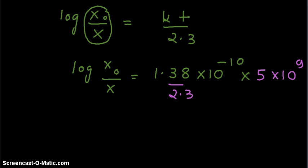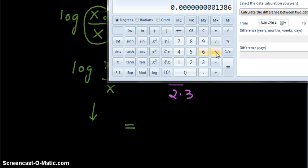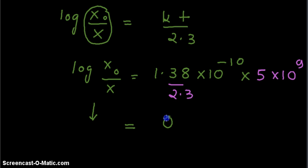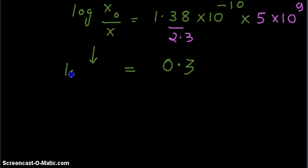So we get this equal to 5 × 10⁹ divided by 2.3, which equals 0.3. Therefore, log(x₀ / x) = 0.3.